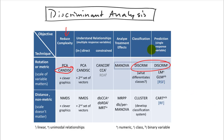Linear discriminant analysis is about classification. We work with groups or classes and can make predictions. If we have an observation and wonder to which group it belongs, we can classify it with this analysis. We can also ask what differentiates these classes — which variables are responsible for distinguishing between two or more groups.